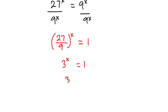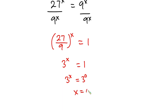So we have 3 to the power x is equal to 1, which is the same as 3 to the power x equals 3 to the power 0. Since the bases are the same, straight away we have x is equal to 0. This is the first approach.